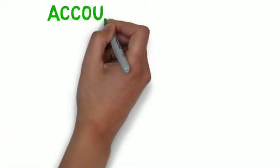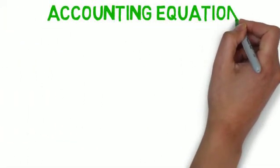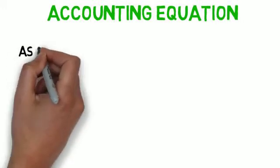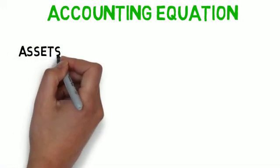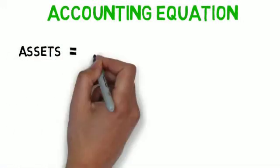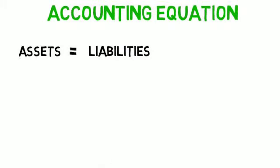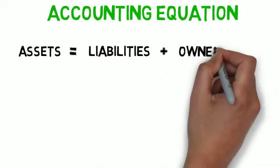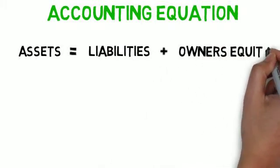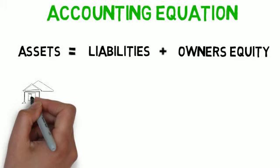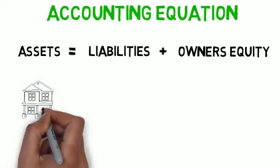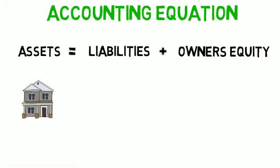Now we know about the basic concepts, let's get to the equation. The equation is simple: assets will always equal liabilities plus owners equity. Basically, assets is what you have, what you own from resources. And liabilities and owners equity is how you were able to have those assets, to buy those assets.